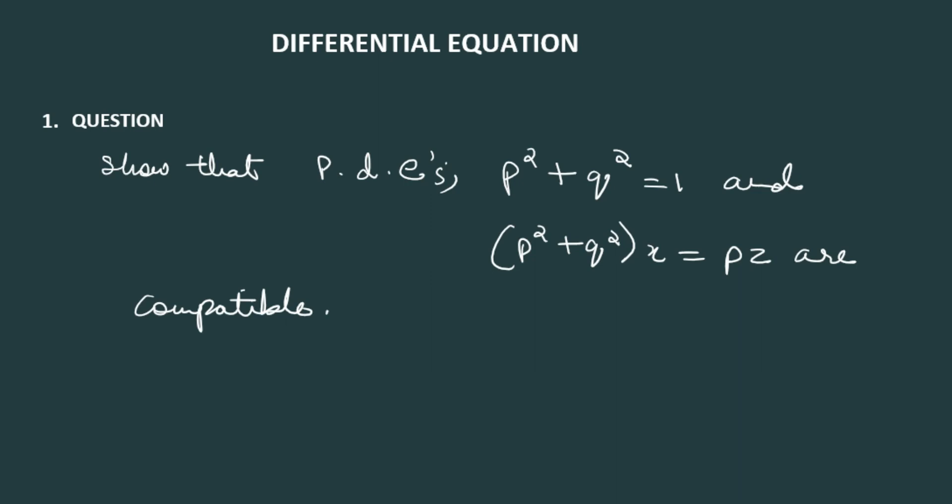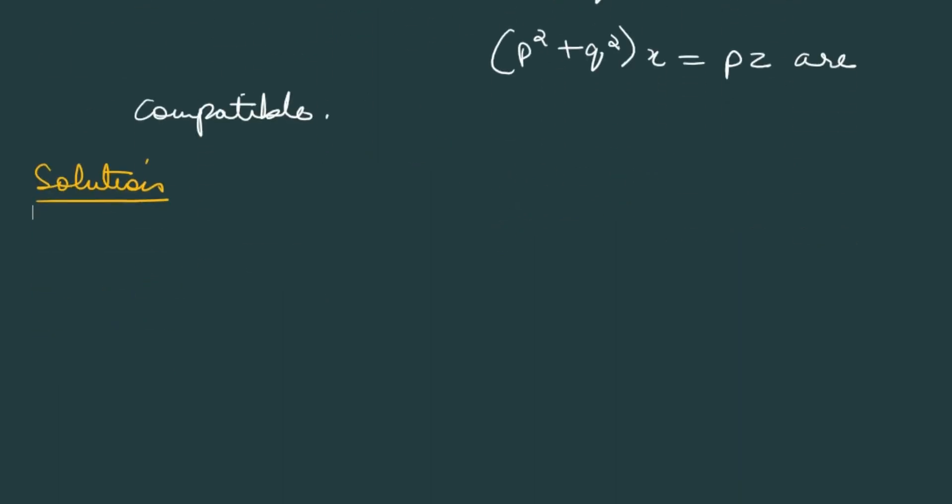Solution: Let f = p² + q² - 1 = 0, and g = p²x + q²x - pz = 0. These are the two parts.